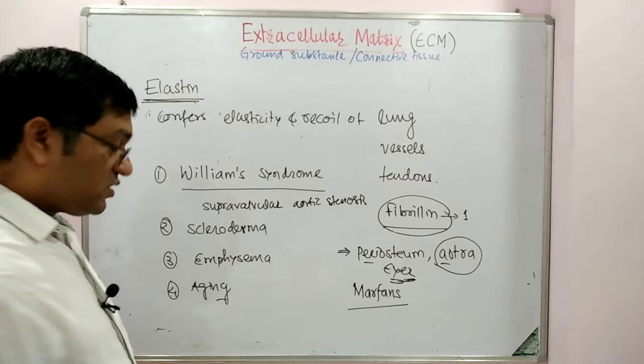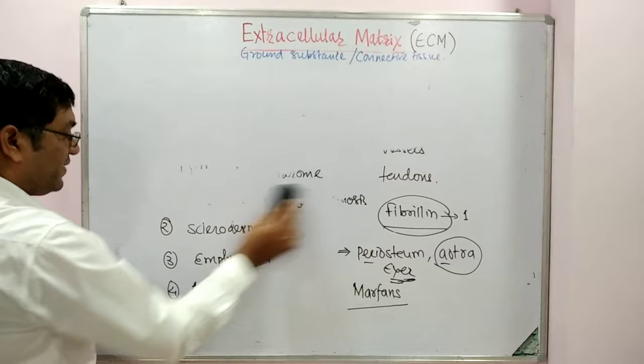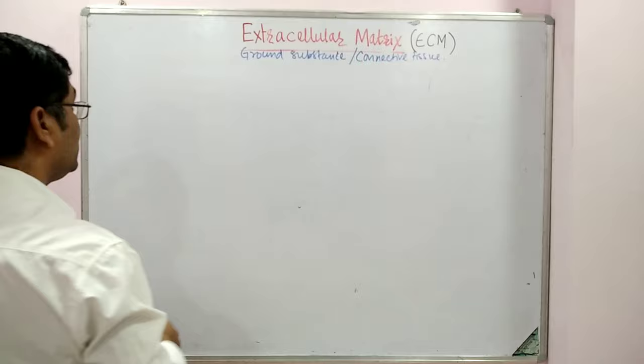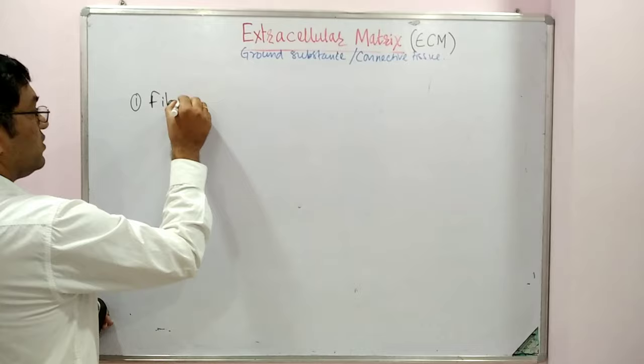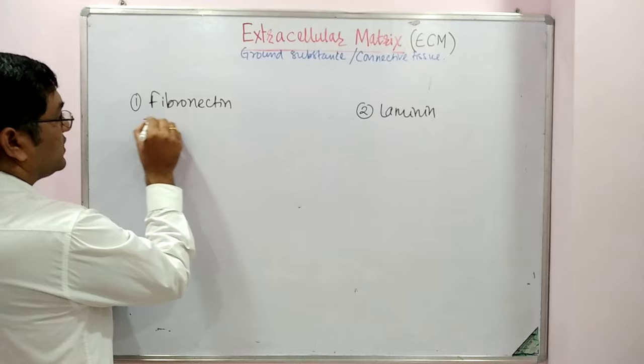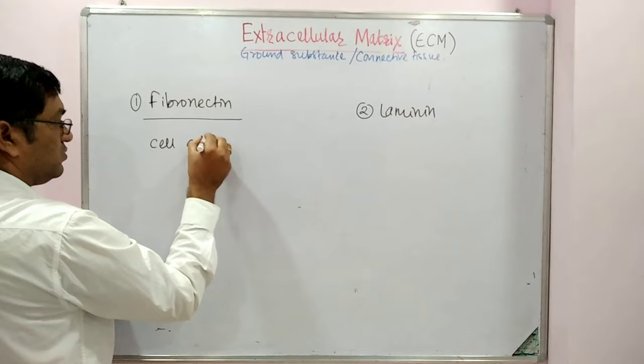Now coming to the specialized glycoproteins. Glycoprotein means carbohydrate plus protein. The specialized glycoproteins present in extracellular matrix are fibronectin and laminin. Fibronectin is a glycoprotein responsible for cell adhesion and cell migration, and for connection between cell and extracellular matrix.